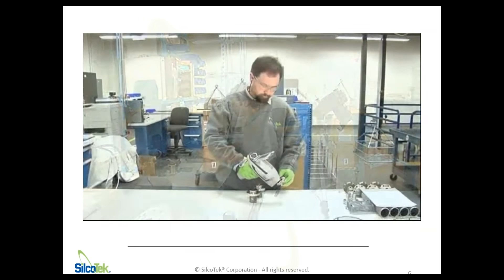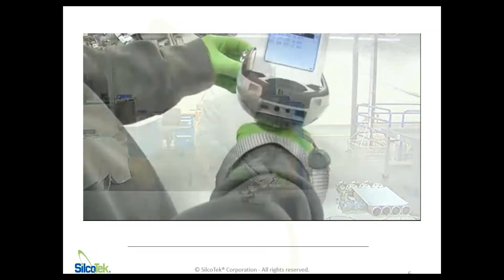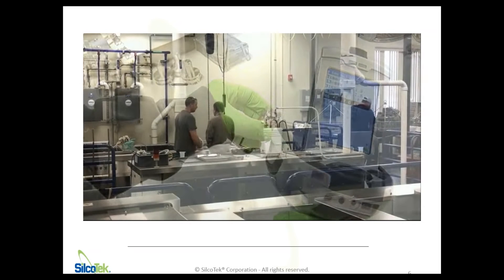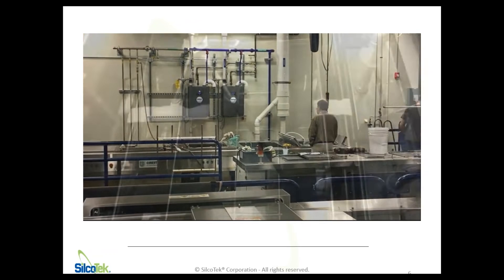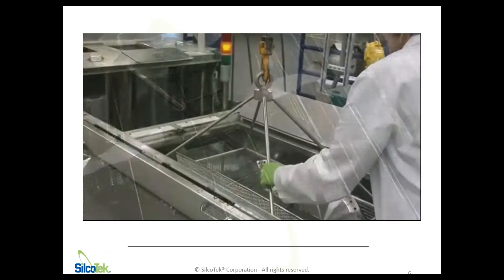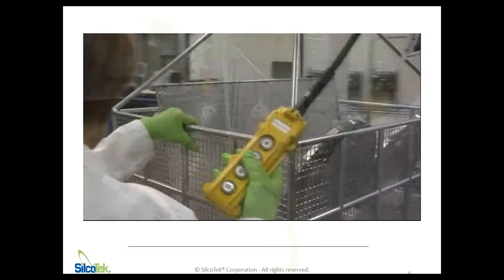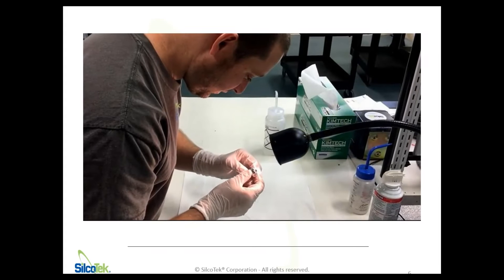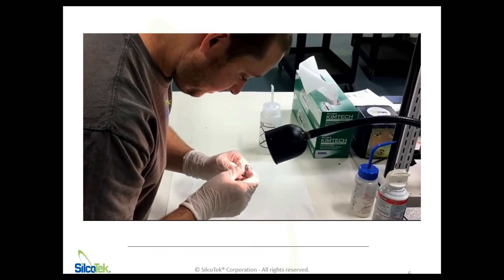Before any new parts are coated that we haven't seen before, Silcotech analyzes the composition of the substrate using X-ray fluorescence to ensure that they're compatible with the process. Proper surface preparation is crucial to success with Silcotech's Chemical Vapor Deposition, or CVD, coating process. Your parts are cleaned in caustic aqueous baths to remove residual contaminants, greases, and fingerprints that can lead to poor coating appearance after the high-temperature process. The parts are again inspected for cleanliness prior to being loaded into the CVD process chambers.